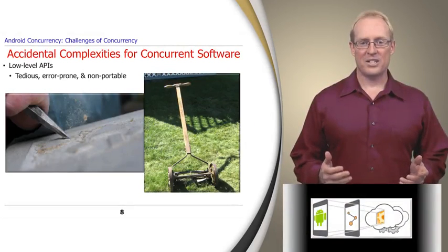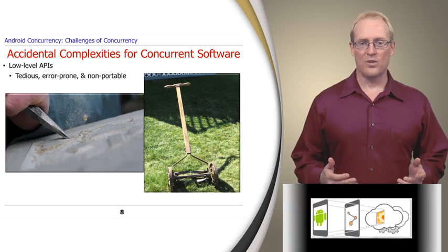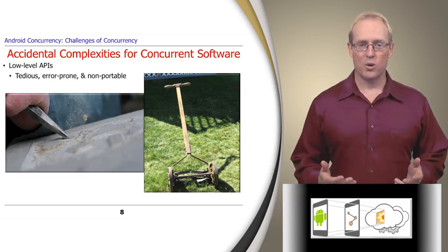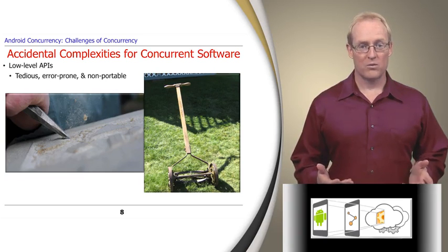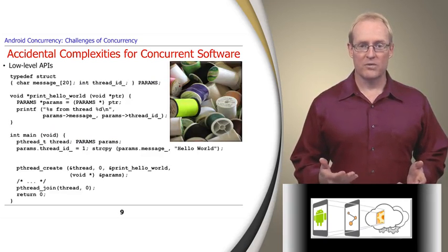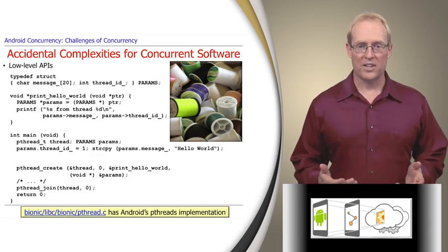A common accidental complexity is the use of low-level application programming interfaces or APIs, which are tedious, error-prone, and non-portable when used to develop concurrent software. For example, consider the pthreads concurrency API that's available in UNIX, including the versions of Linux used in Android, as shown at this path name. A number of accidental complexities are associated with using the pthread API to write concurrent software.